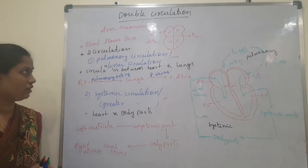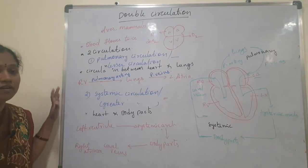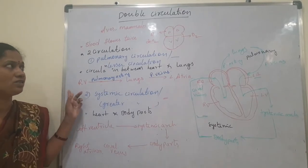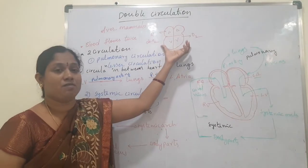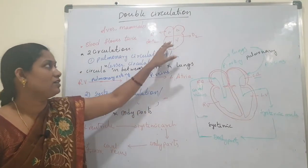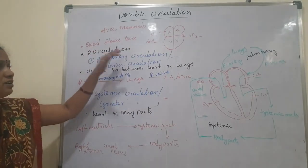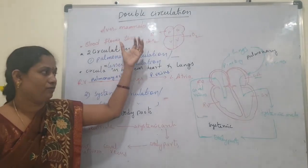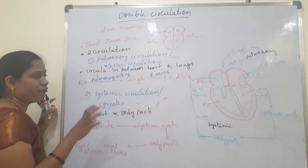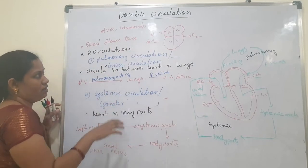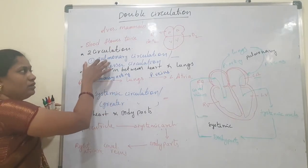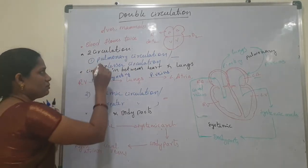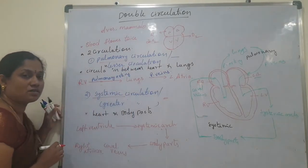So this is about double circulation. It is very well developed in aves and mammals, where deoxygenated and oxygenated blood are completely separated. Double circulation means the blood flows two times through the heart, and two circulations take place: pulmonary circulation and systemic circulation.